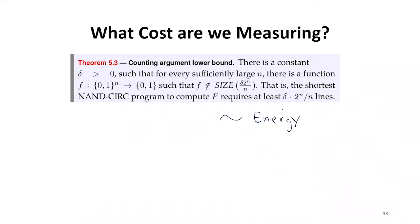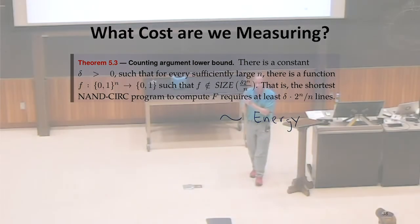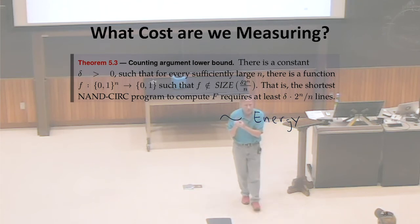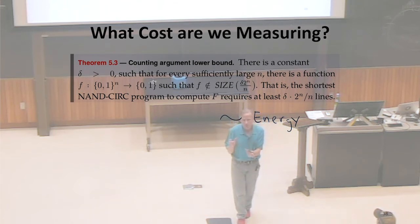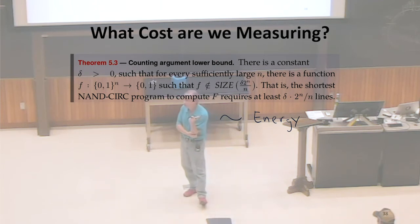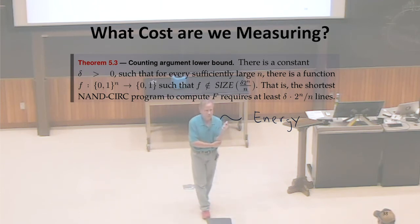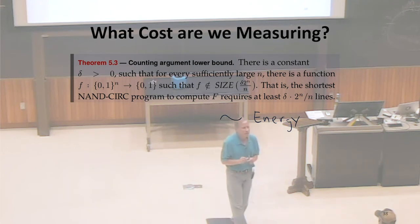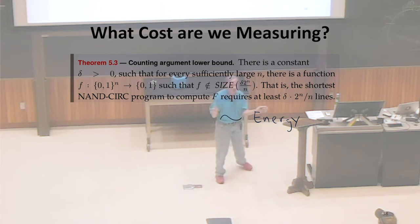That assumes we've actually got a custom circuit. If we're running it as code on a processor, then the cost to execute it as code won't be closely related to the size of the circuit. If we care about time, how good a proxy is circuit size for time? What property of the circuit tells us how long it takes to execute with one execution? The depth of the circuit — we can execute each layer in parallel, but the time it takes is the depth.